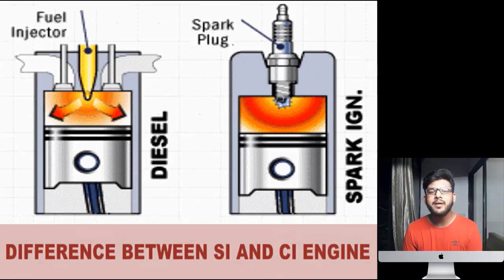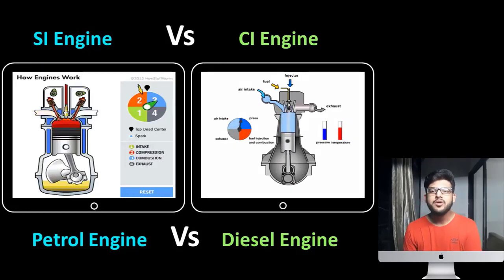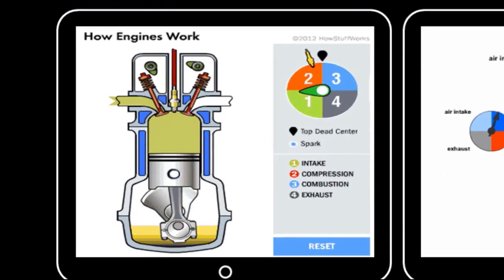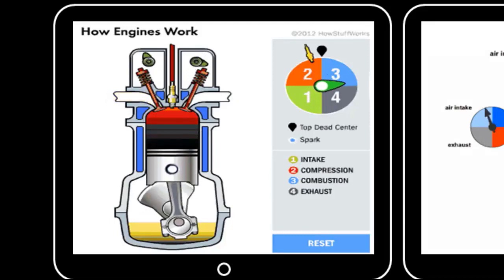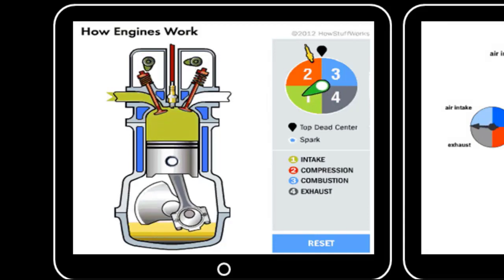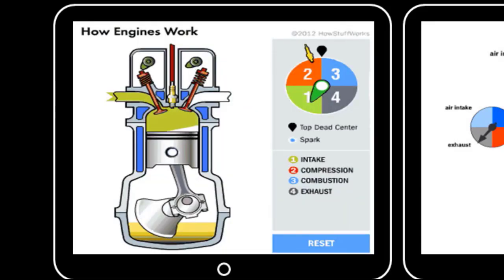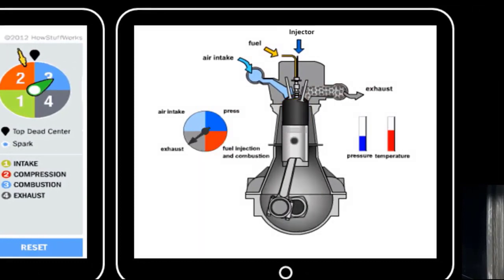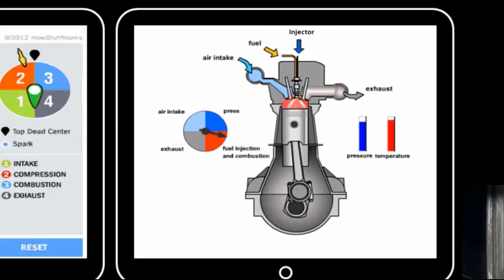That was not the only difference — there are many differences. Let me show you one by one. Before moving to the differences, let me show you some simple working so you can remember what we learned earlier. In SI engine, four strokes are done. In the power stroke we are using a spark plug. In the intake stroke, we are taking air and fuel mixture as inlet. In CI engine, we have an injector and we are taking only air as inlet. That is the basic difference between them.